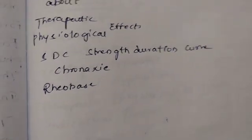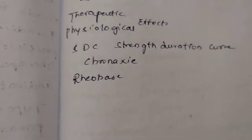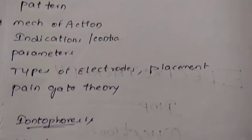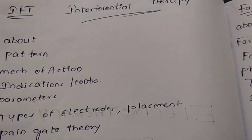Chronaxi and rheobase — these are important for both 5-mark and 2-mark questions. Review these important topics thoroughly.